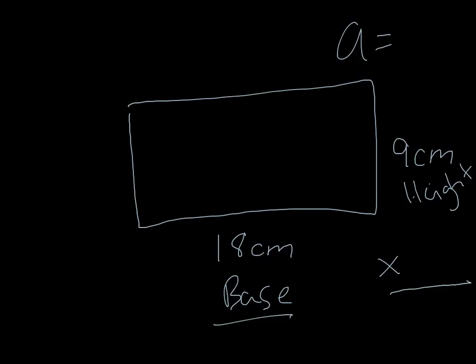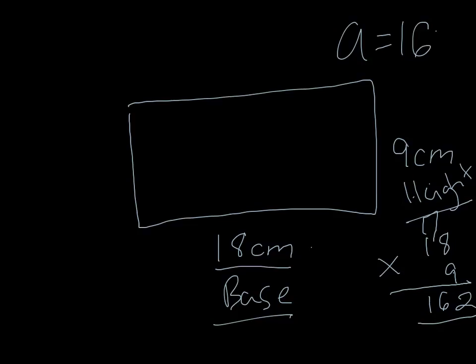To find an area, you have to do base times height. So it would be 18 times 9. 8 times 9 is 72. 9 times 1 is 9. Then you have to add your 7, which is 16. And then your area is 162.